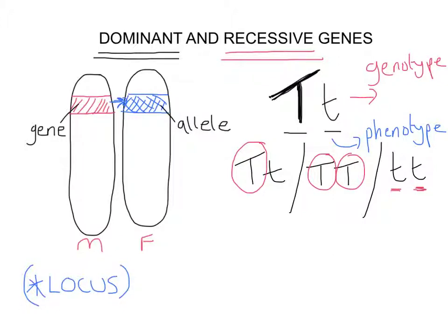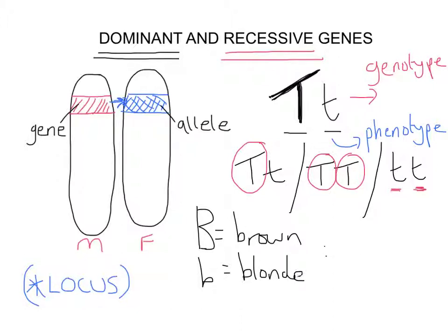Let's think of another example. In real life, brown hair is dominant to blonde. We use a big B to represent brown, so big B is brown and little b is blonde. If someone were big B, big B — remember they've got two genes, one from each parent — that person would have brown hair. If they were big B, little b, remember dominant wins, they would also have brown hair. They would need two little b's to have blonde hair — that's recessive.